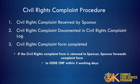The civil rights complaint procedure is as follows. A civil rights complaint is received by the sponsor, either verbally or in writing. Next, the sponsor logs the complaint in the civil rights complaint log. Additionally, the sponsor gives the complainant the civil rights complaint form, or assists the complainant to complete it if needed. If the complainant returns the form to the sponsor, the sponsor must forward it to the SA within three working days.